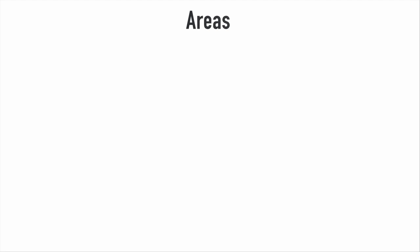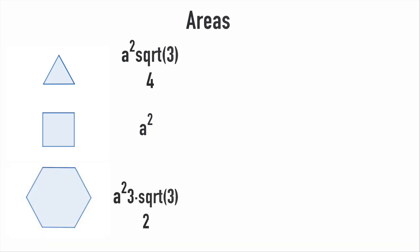Let's talk about areas now. For an equilateral triangle with side length a, the area is a squared root 3 over 4. For a square, the area is a squared. And for a regular hexagon, it becomes 3 root 3 a squared over 2.